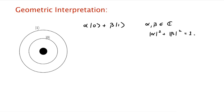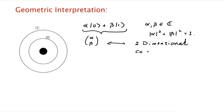To specify the state we need two complex numbers. Another way to write down the state is by stacking the two numbers as a column vector (alpha, beta). This is very suggestive because it says the state is a vector in a two-dimensional complex vector space. The normalization condition |alpha|² + |beta|² = 1 means this is a unit vector.